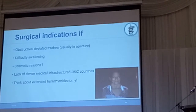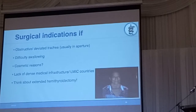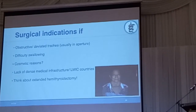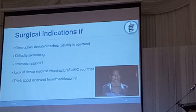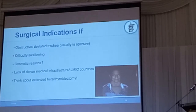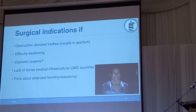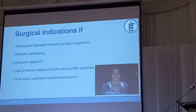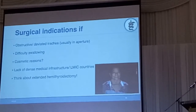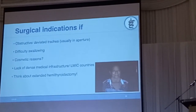In my country, cosmetic reasons are another reason to operate on goiters. Last year we did a mission in Kenya — we operated a lot of patients with huge goiters. Working with a Kenyan surgeon, we had a strategy of doing extended hemithyroidectomies, removing the largest part of the thyroid and going across the trachea, because we didn't know whether they had access to thyroxine. The patients were very happy — the trachea was in line and they had no more difficulties breathing or swallowing.